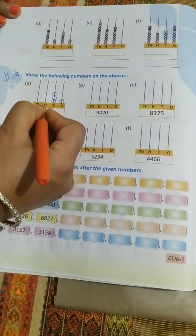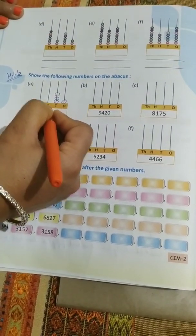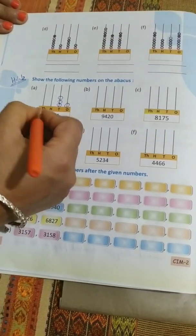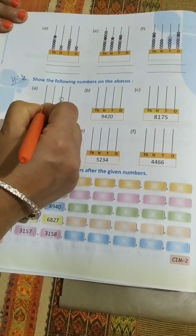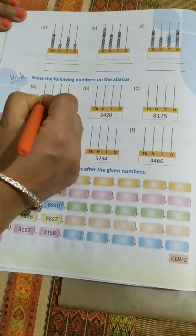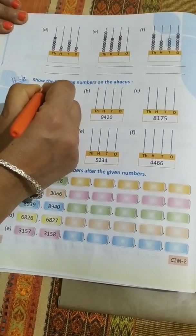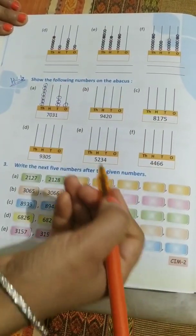place is 0, means nothing will be here. On the thousand place we have 7, means on the thousandth rod you have to draw 7 beads: 1, 2, 3, 4, 5, 6, 7. Okay,